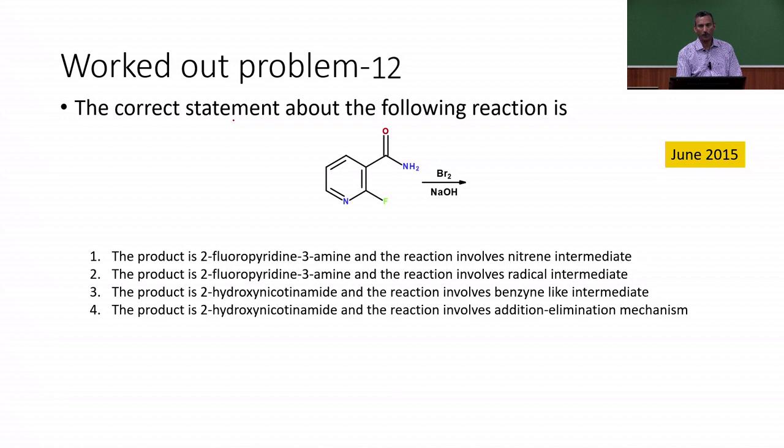Here the correct statement about the following reaction is: an amide is given and bromine and sodium hydroxide is given as a reagent and we have to find out what is the product that is formed and there are four statements given. This question was asked in June 2015. The product is 2-fluoropyridine-3-amine and the reaction involves nitrene intermediate.